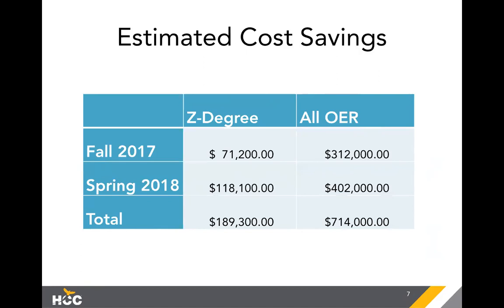We also want to project not only what we're doing in the Z degree, but what all of our professors across the institution are doing with OER. Some may be people we've trained in the Z degree who are offering OER classes not tagged as Z degree, or instructors at different campuses we haven't yet contacted. This is an estimate based on survey data, but we suspect that in just a year's time we're probably saving close to a million dollars in textbook costs for students.